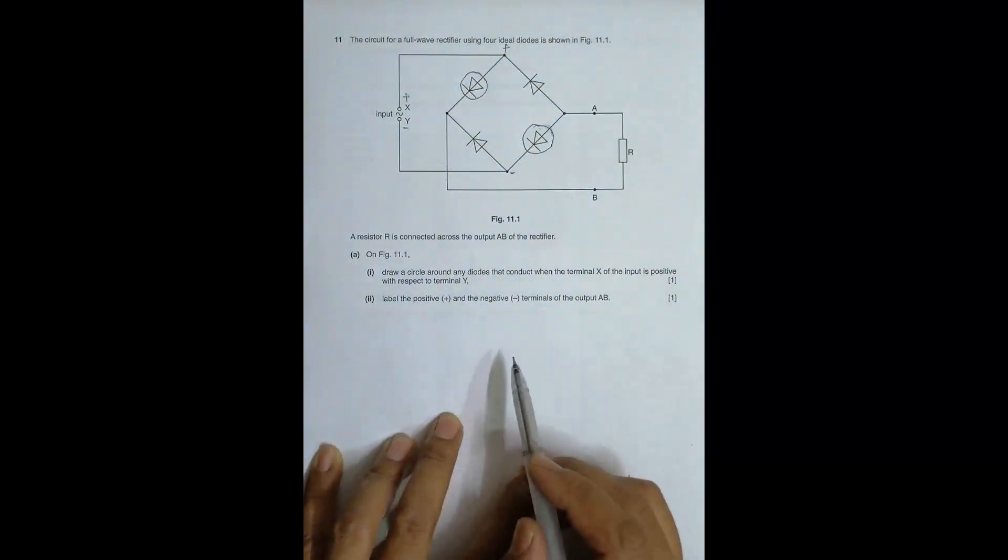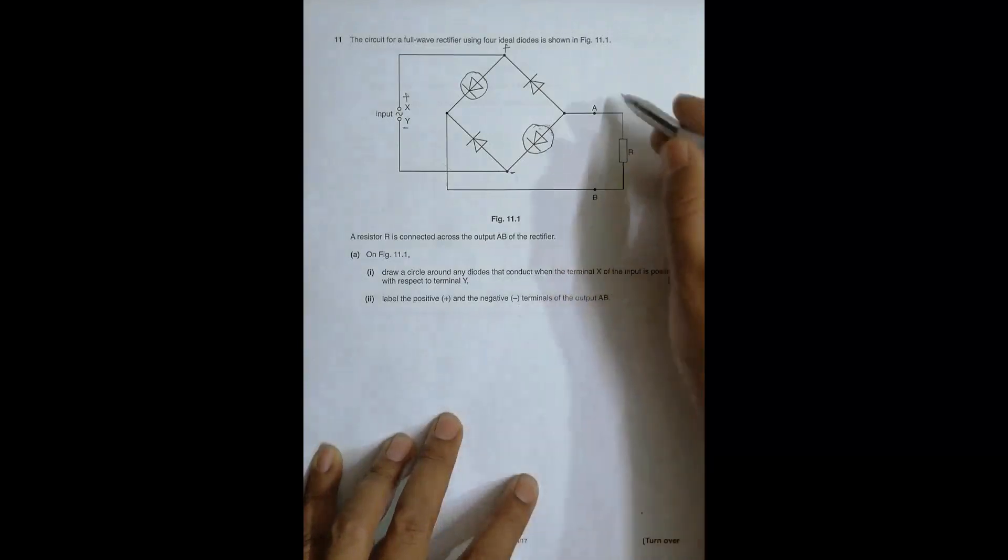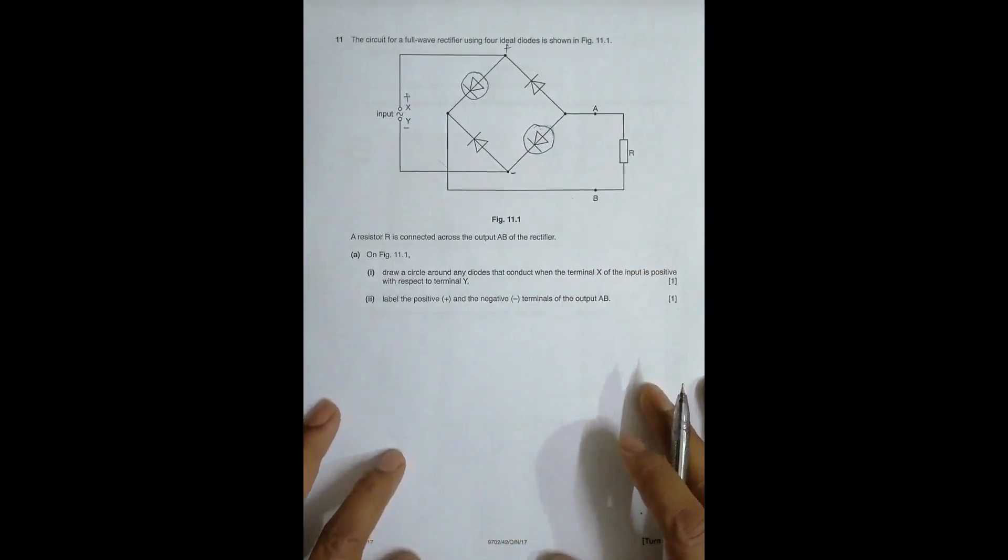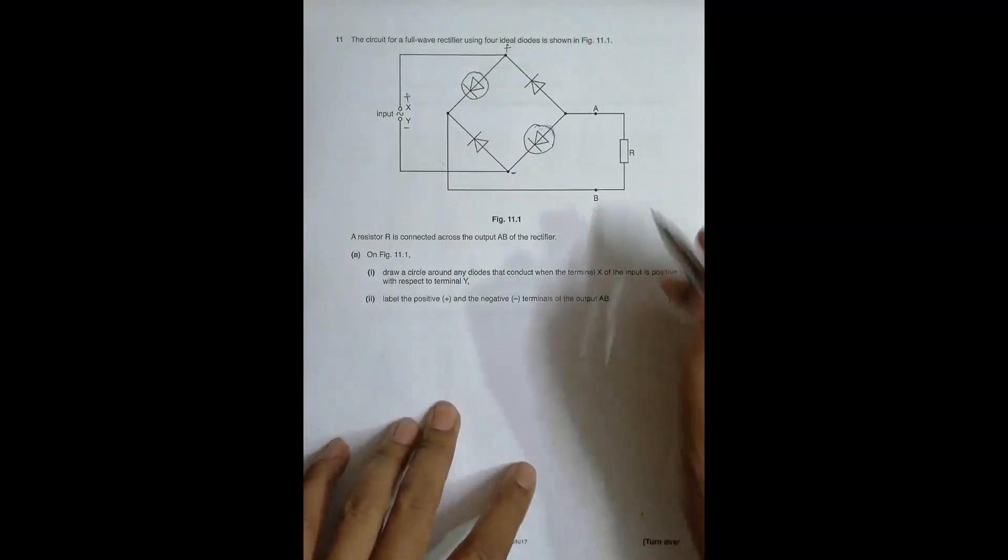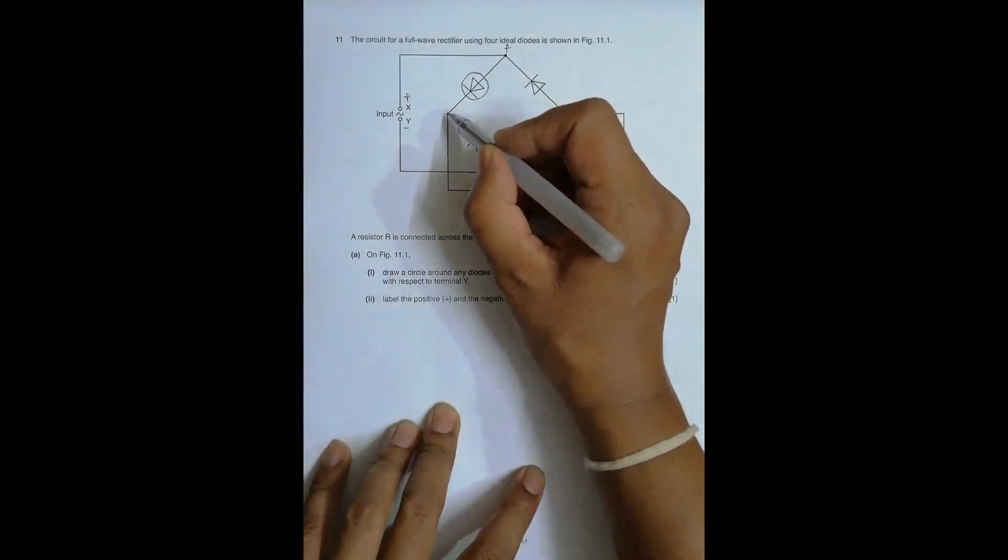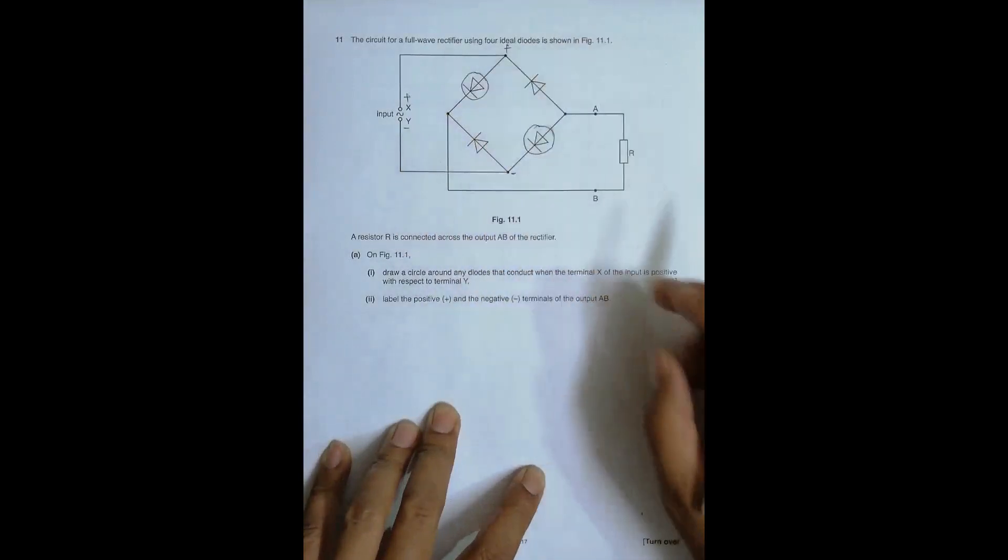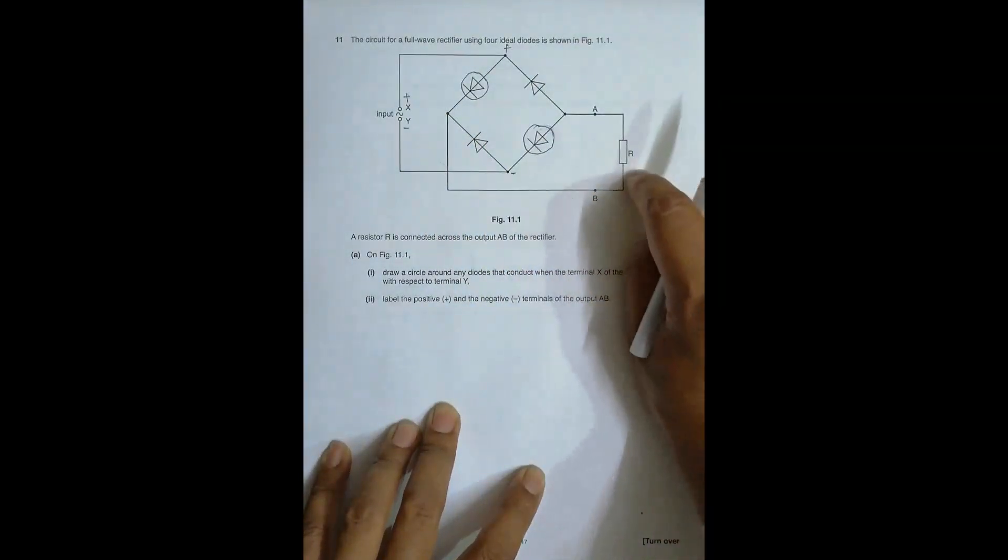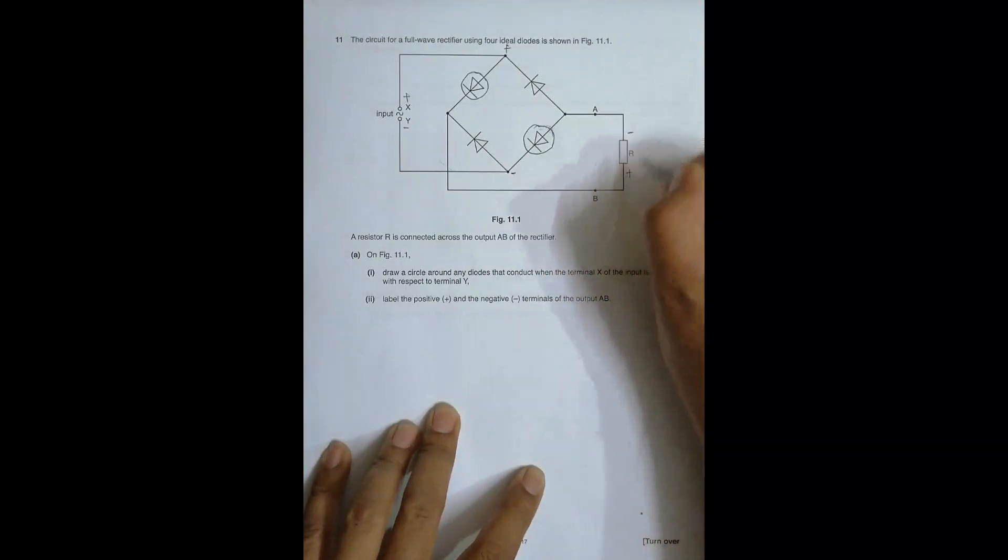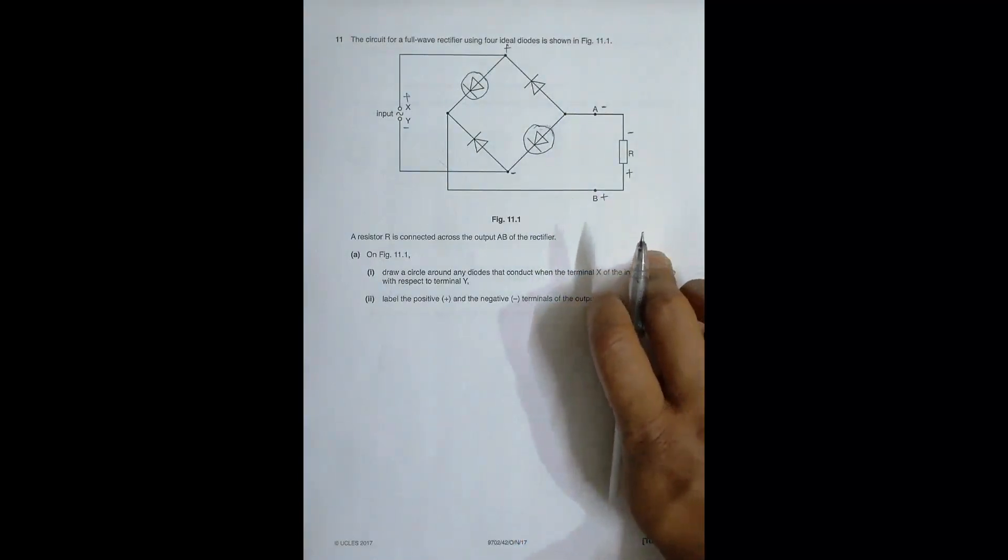So label the positive and the negative terminals of the output AB. The golden rule in these things is that the positive side of the resistor will be that side which is in contact with the joint where inside of the diodes meet. So the positive side of the resistor will be at that point, the side where the inside of the diodes meet. So this should be positive and this should be negative. So I can put it here as well and here as well. So this will be negative.